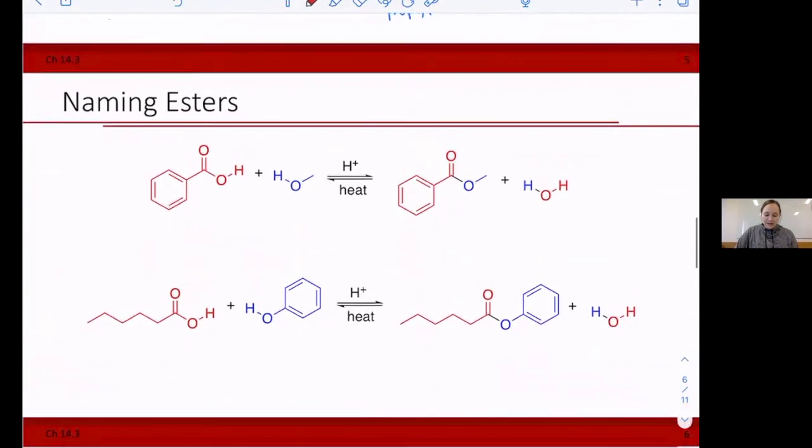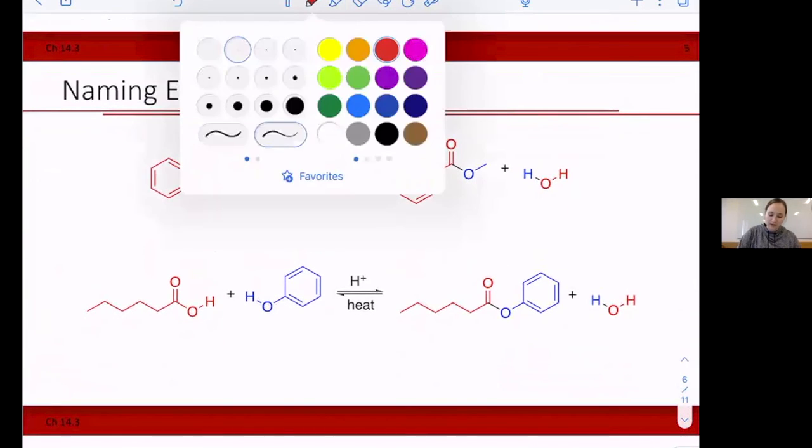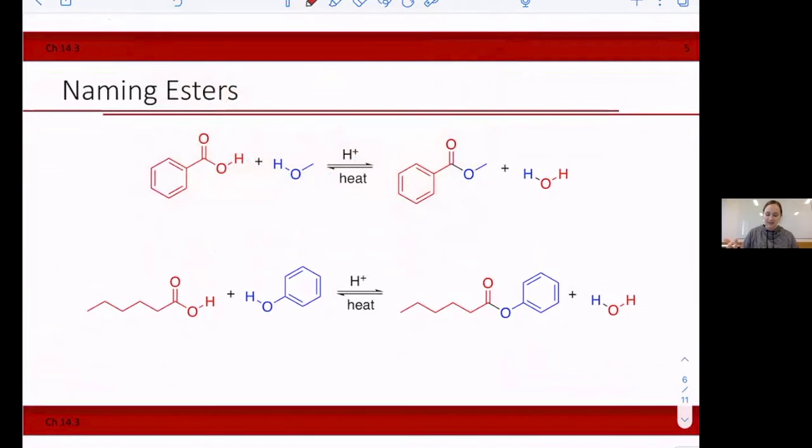Okay. Let's do a couple of practice ones real quick. So what I like to do in order to do these is to name the starting materials for the esterification reaction. And then it makes it really easy to come up with the name of the ester. So my carboxylic acid here is benzoic acid. And then my alcohol here is methanol.